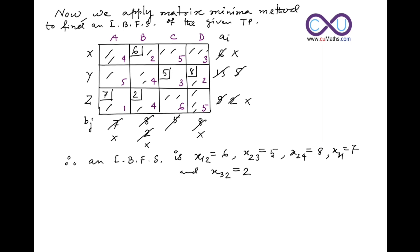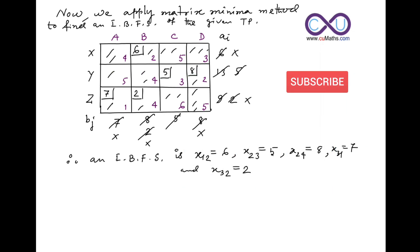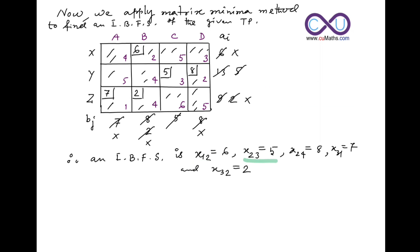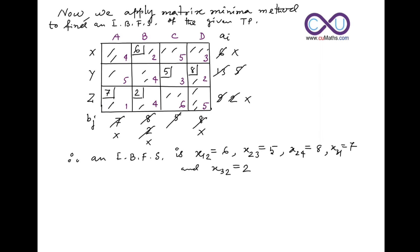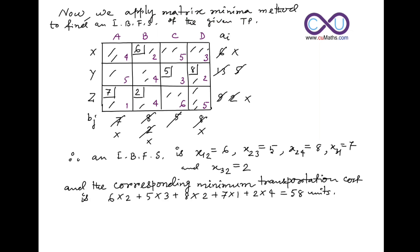Now we write down the initial basic feasible solution. We label cells using notation: x11, x12, x13, x14, x21, x22, x23, x24, x31, x32, and so on. The allocations are: x12 equals 6, x23 equals 5, x24 equals 8, x31 equals 7, and x32 equals 2.